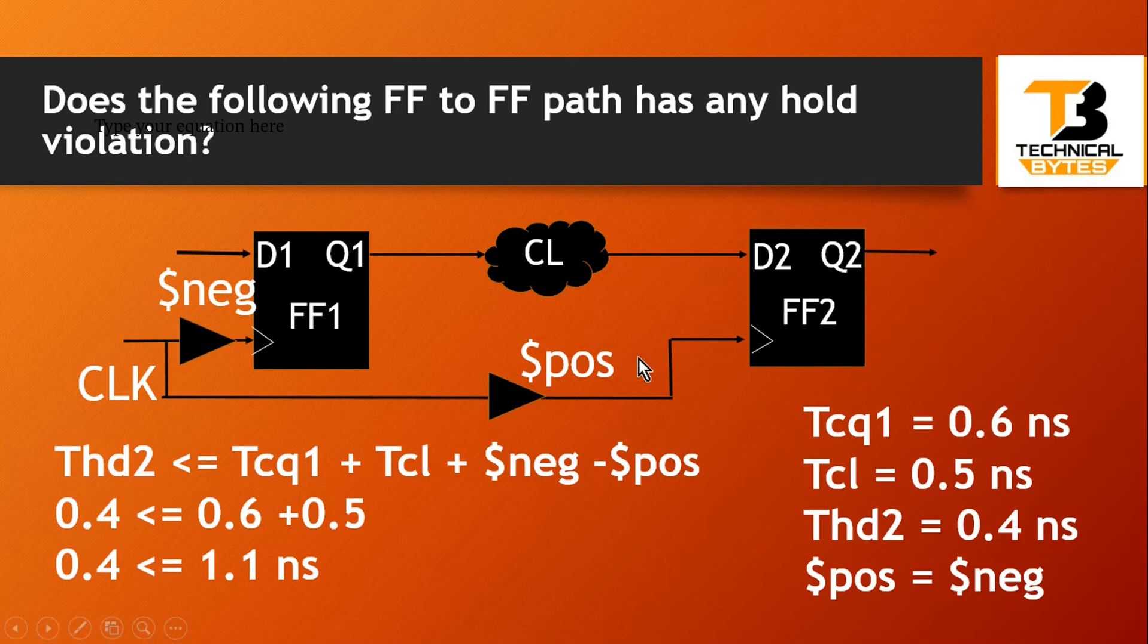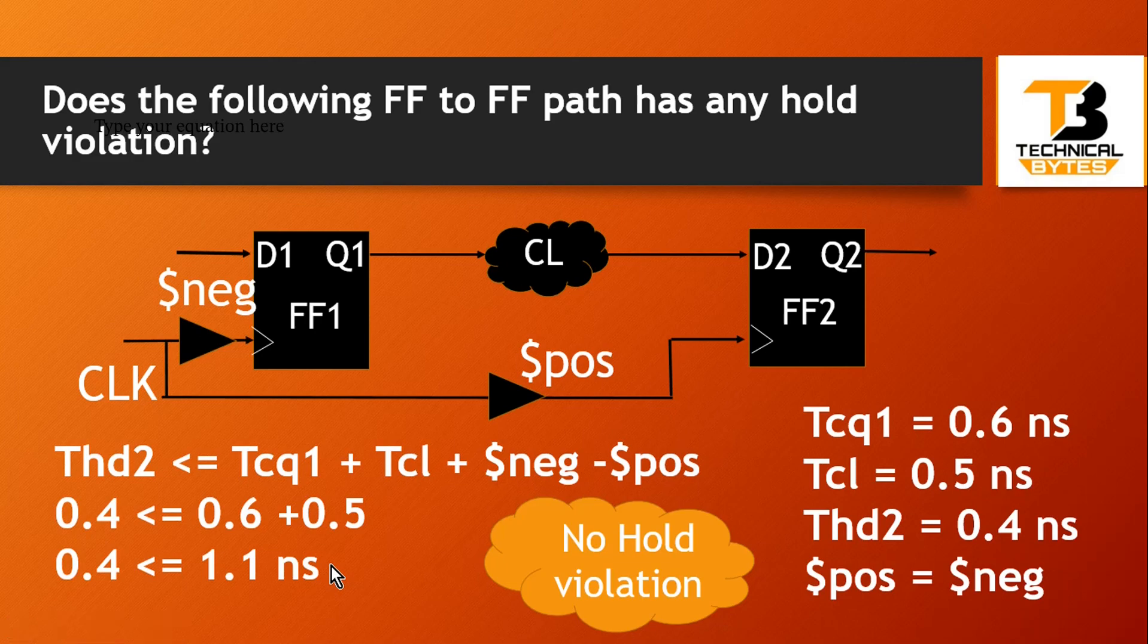The hold time of the second flip-flop is 0.4 nanoseconds. TCQ is the delay of the first flip-flop, which is 0.6. TCL is 0.5 nanoseconds. Negative skew and positive skew are equal, so they will get cancelled. So 0.4 is less than or equal to 1.1 nanoseconds. That means this equation is fulfilled and there will not be any hold violation.